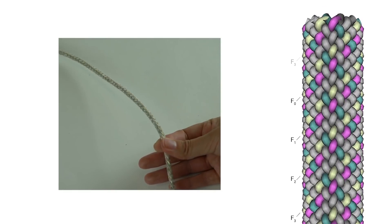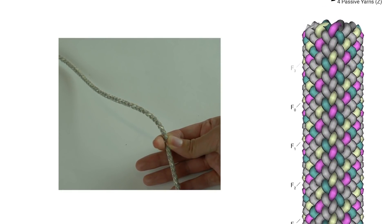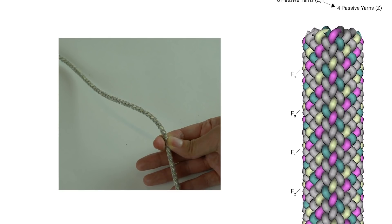The right braid shows how we can replace passive yarns with fiber optic lines to embed visual feedback using the same topology. Here we have added four fiber optic lines F0 through F3 highlighted in yellow.